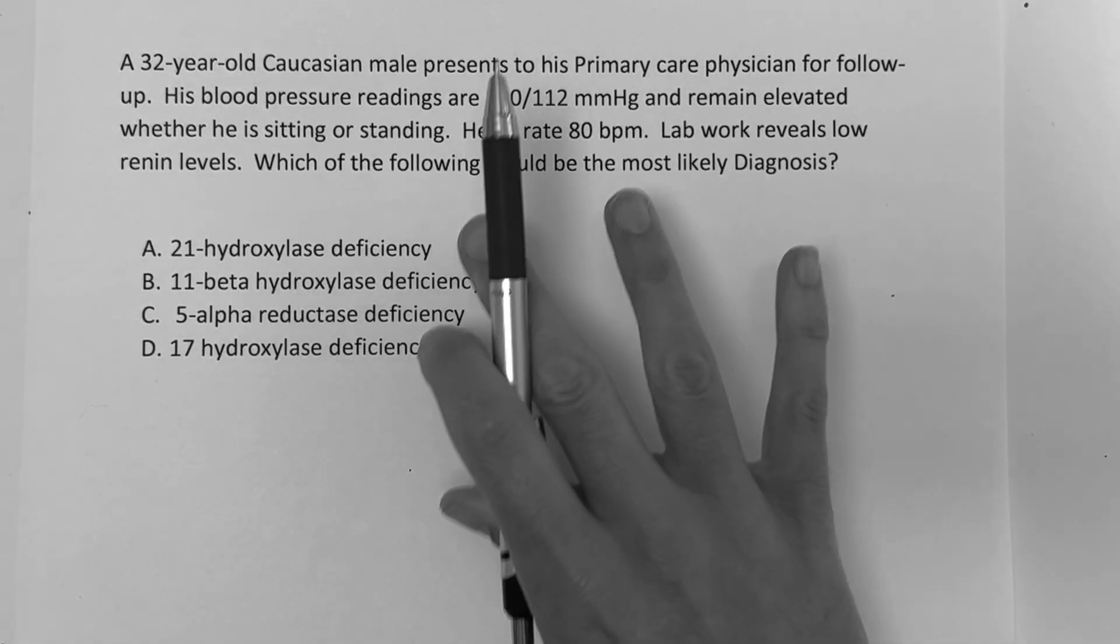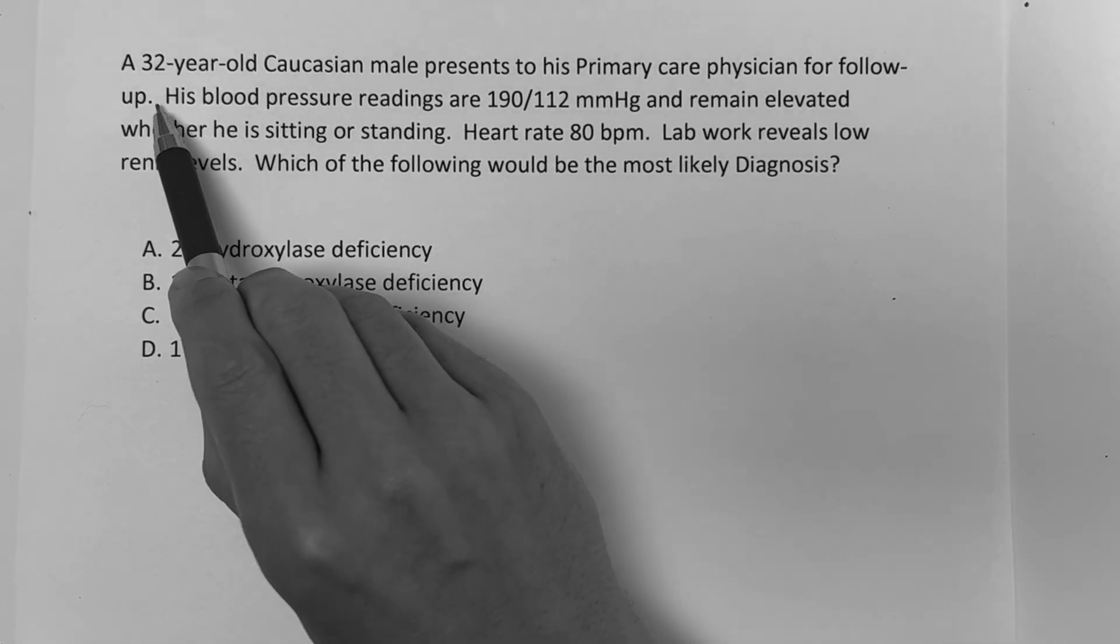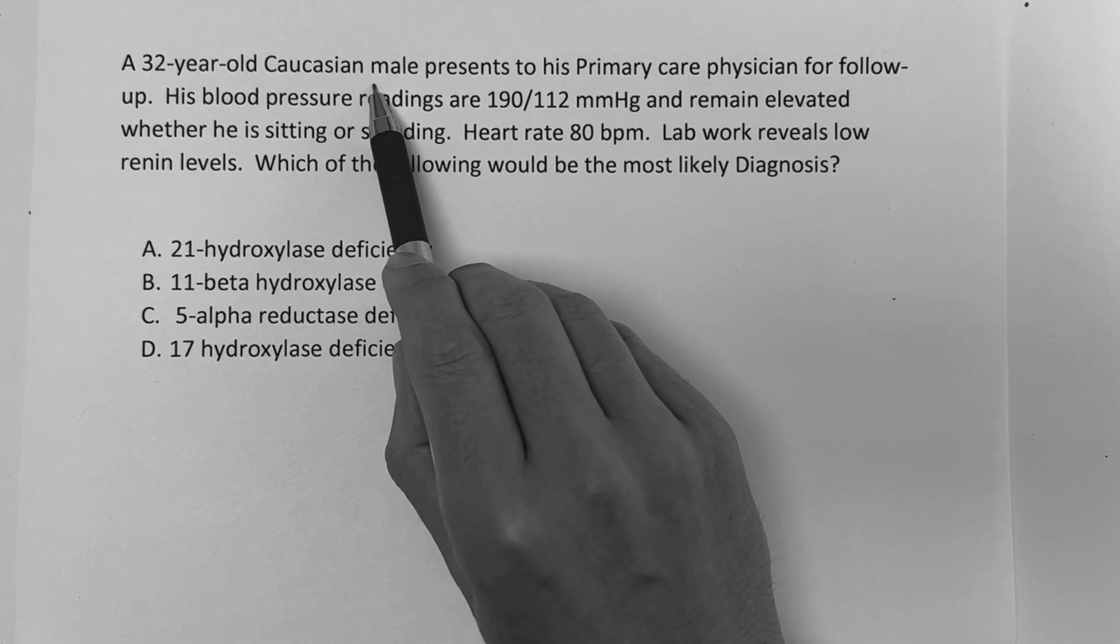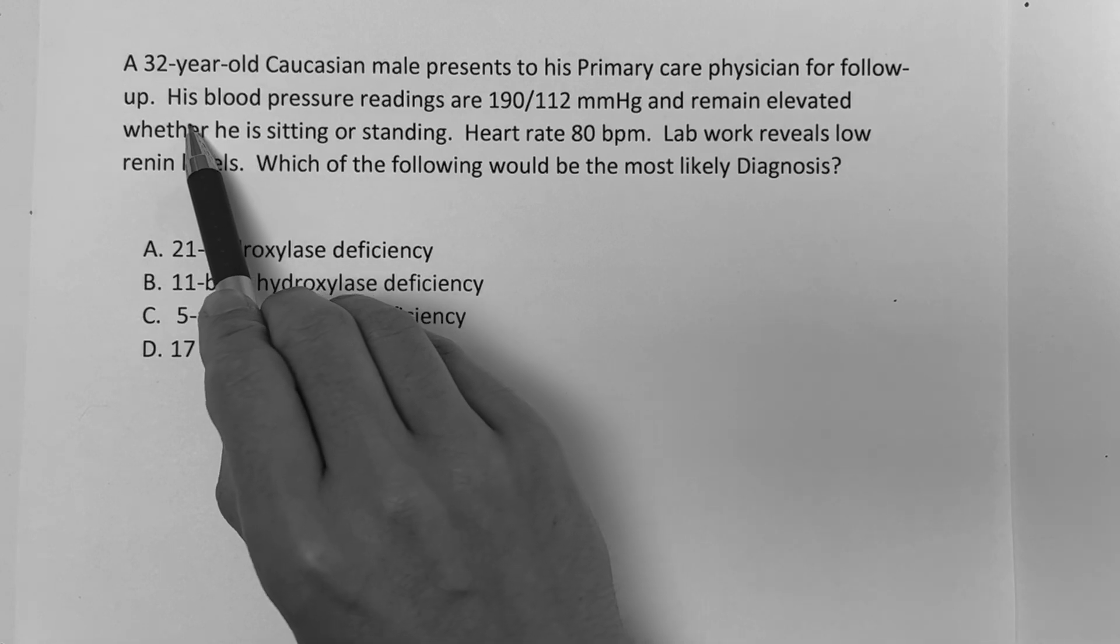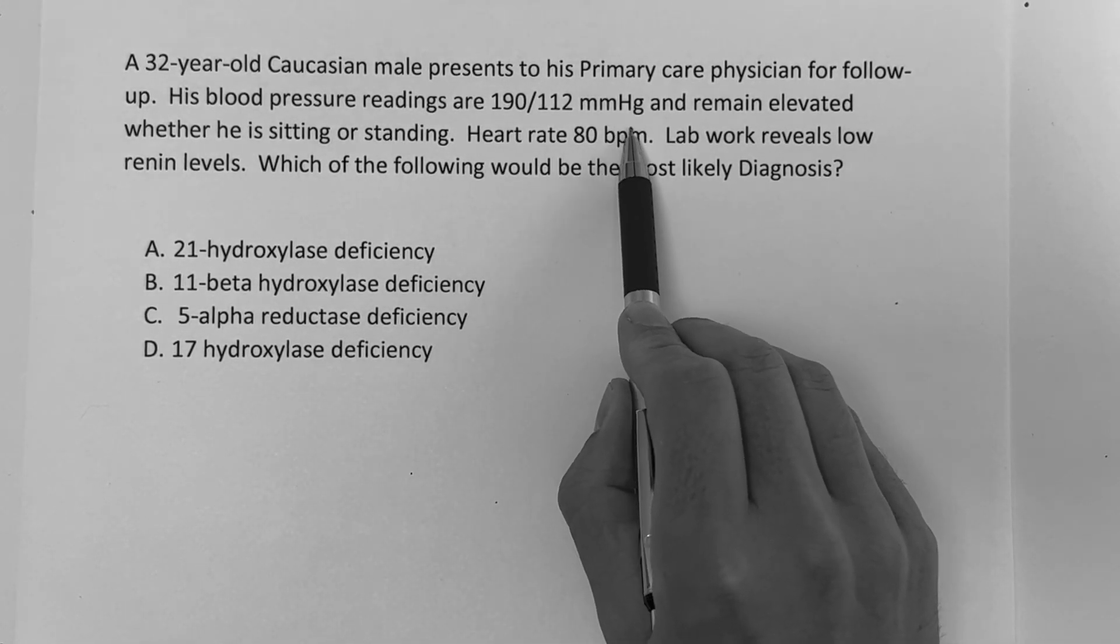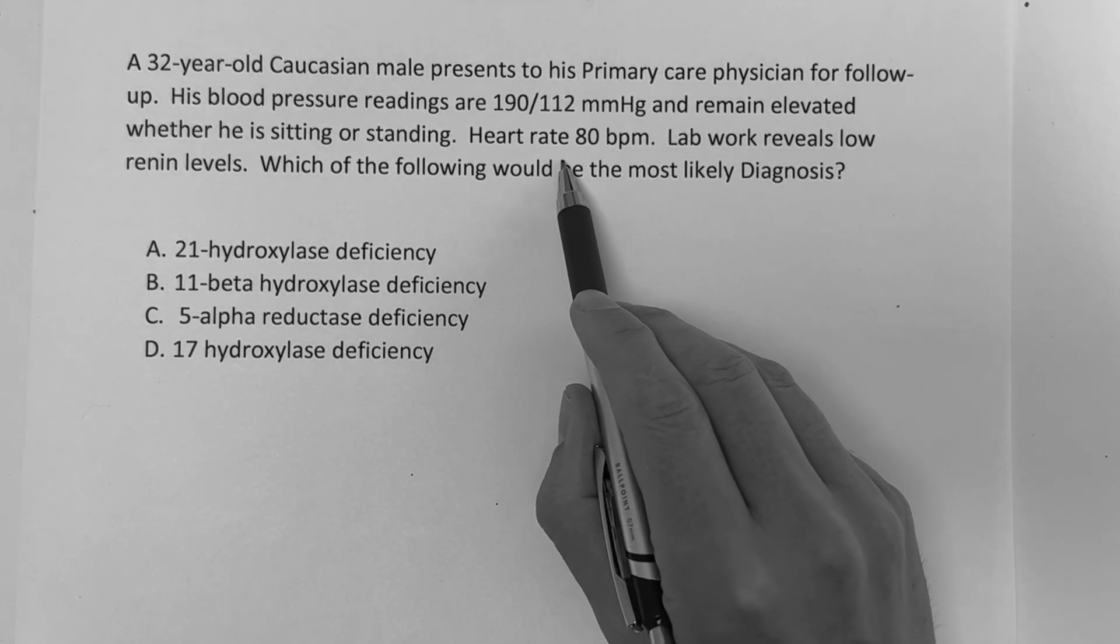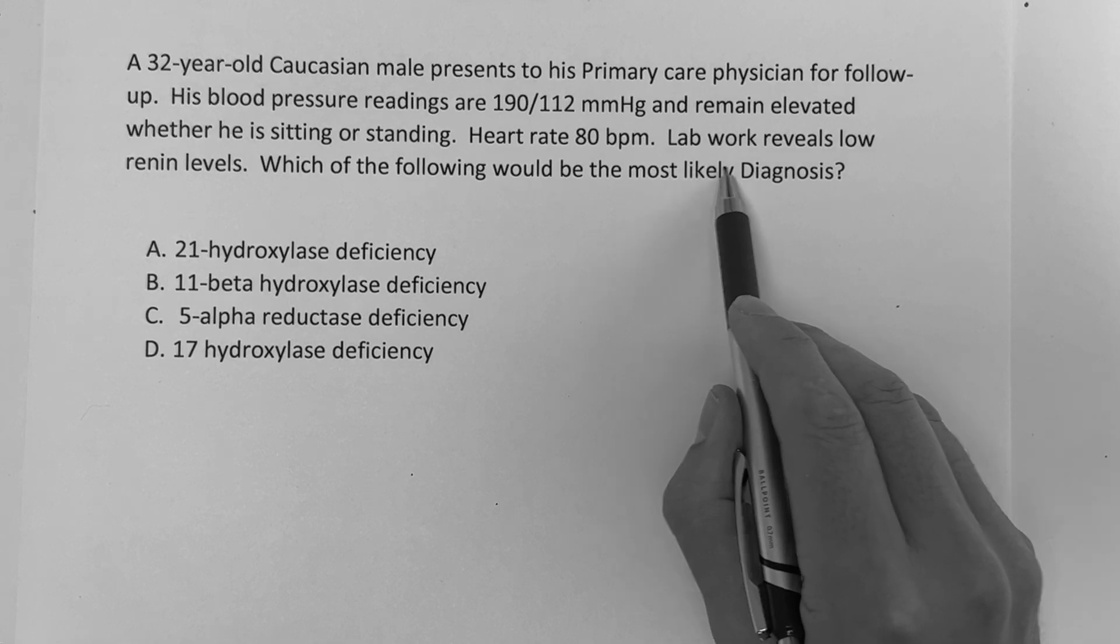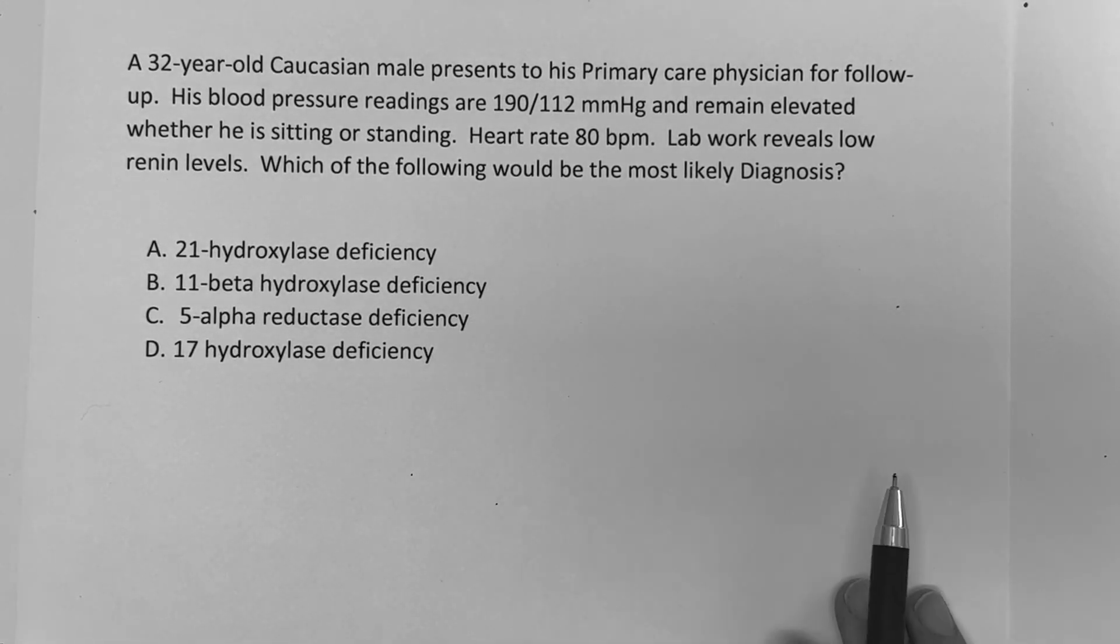So you know you're in the adrenal questions, right? So it reads, a 32-year-old Caucasian male, I'm sorry, presents to his primary care physician for follow-up. His blood pressure readings are 190 over 112 millimeters per mercury and remain elevated whether he is sitting or standing. Heart rate 80 beats per minute. Lab work reveals low renin levels. Which of the following would be the most likely diagnosis?